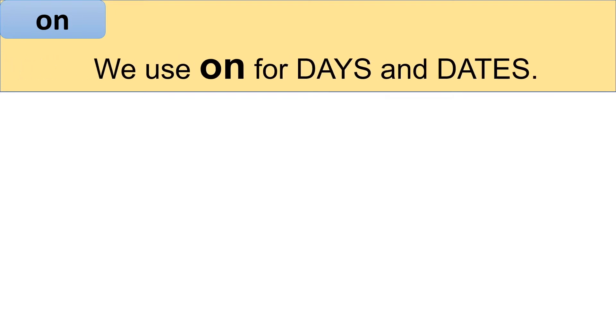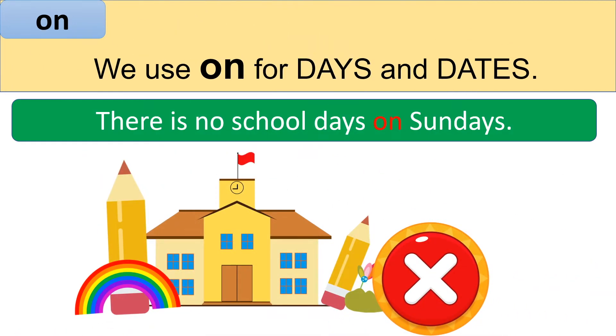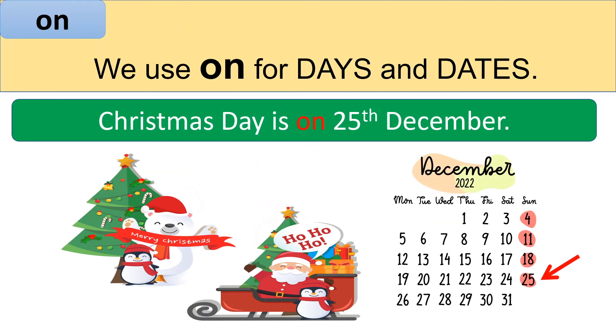We use on for days and dates. For example, there is no school on Sundays. For example, Christmas Day is on the 25th of December.